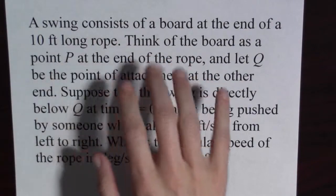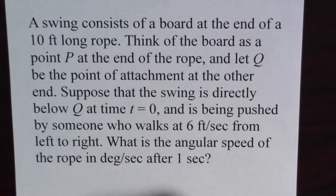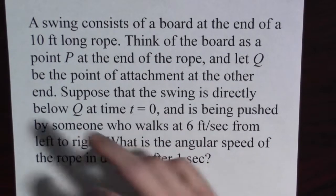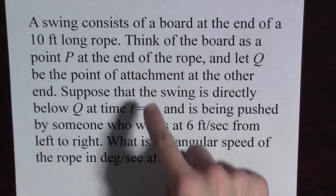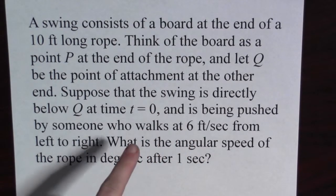A swing consists of a board at the end of a ten foot long rope. Think of the board as a point P at the end of the rope and let Q be the point of attachment at the other end.